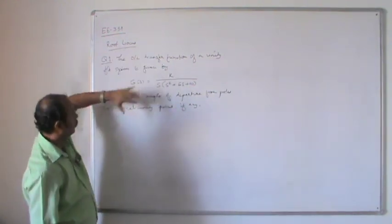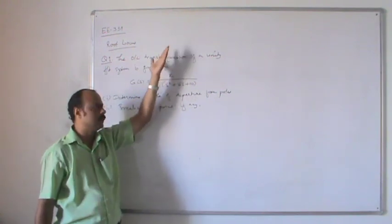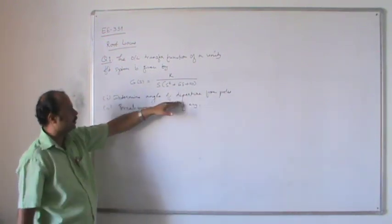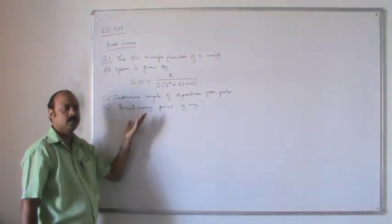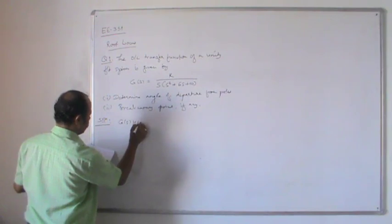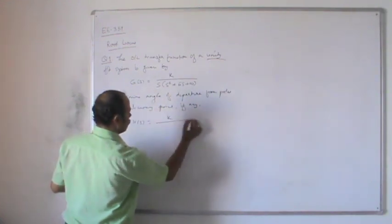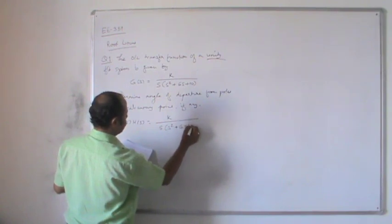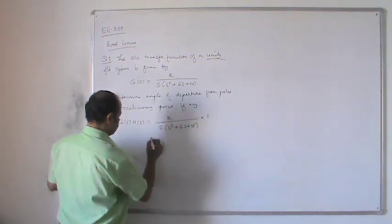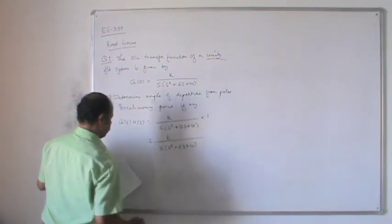Since this is a unity feedback system, H(s) = 1, so G(s)H(s) = k / [s(s² + 6s + 10)]. We need to find the poles. There are a total of 3 poles, so p = 3.